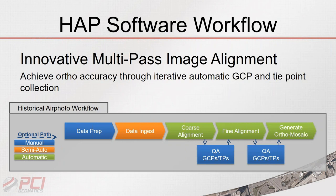The software uses an innovative multi-pass image alignment workflow developed over the past four to five years. Air photos are difficult to work with — they have no geo-referencing and have fiducial marks. The workflow takes original scans, prepares and ingests the data, performs a coarse alignment, refines it to meet accuracy requirements, and then generates final products including orthos, mosaics, and elevation products.